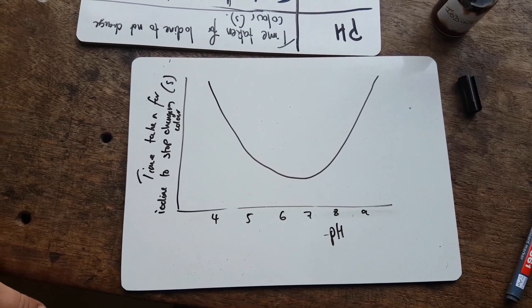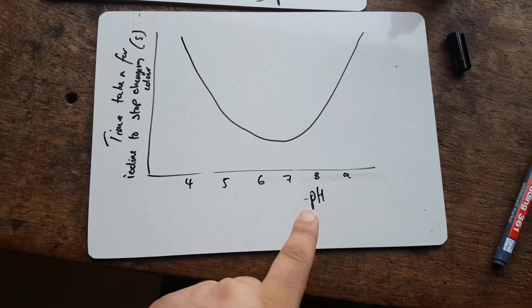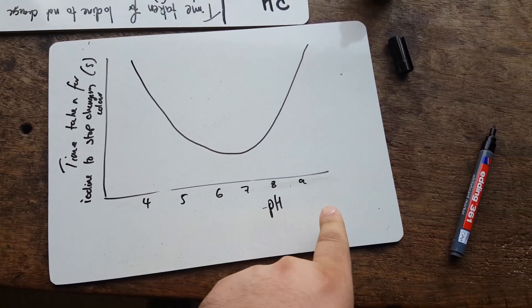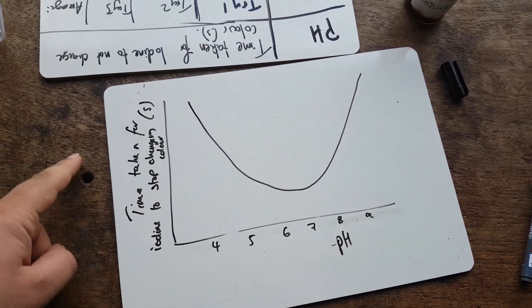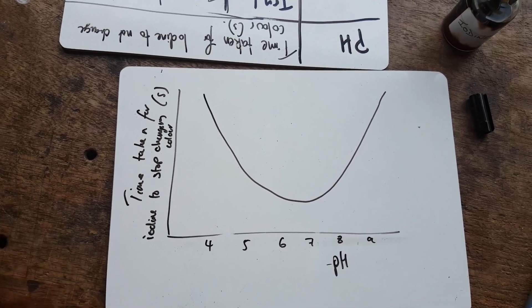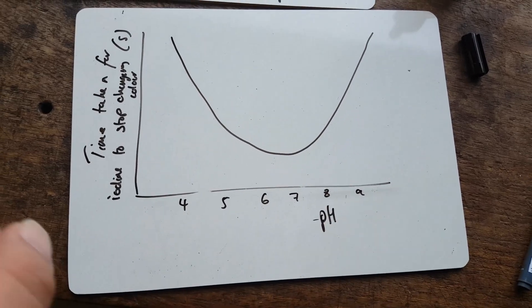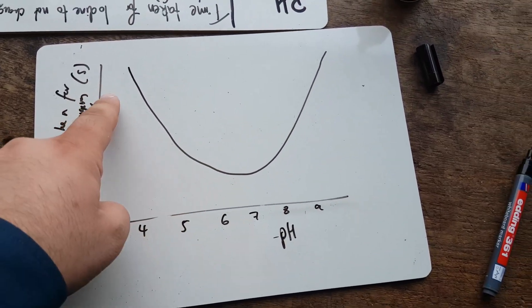Okay, so then what you'll have to do with your results is plot a graph. The graph is going to be of pH, because that's the independent variable, so it's on the x-axis, against a dependent variable, which was the time taken for the iodine to stop changing color. And that's going to be measured in seconds. And you'll have a graph like this. Okay, so what this shows is that...